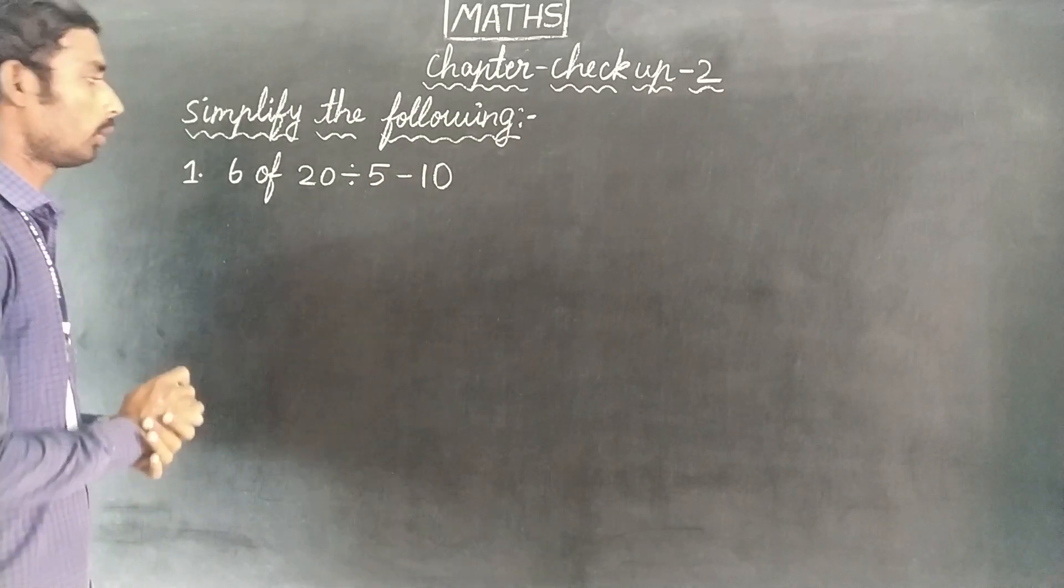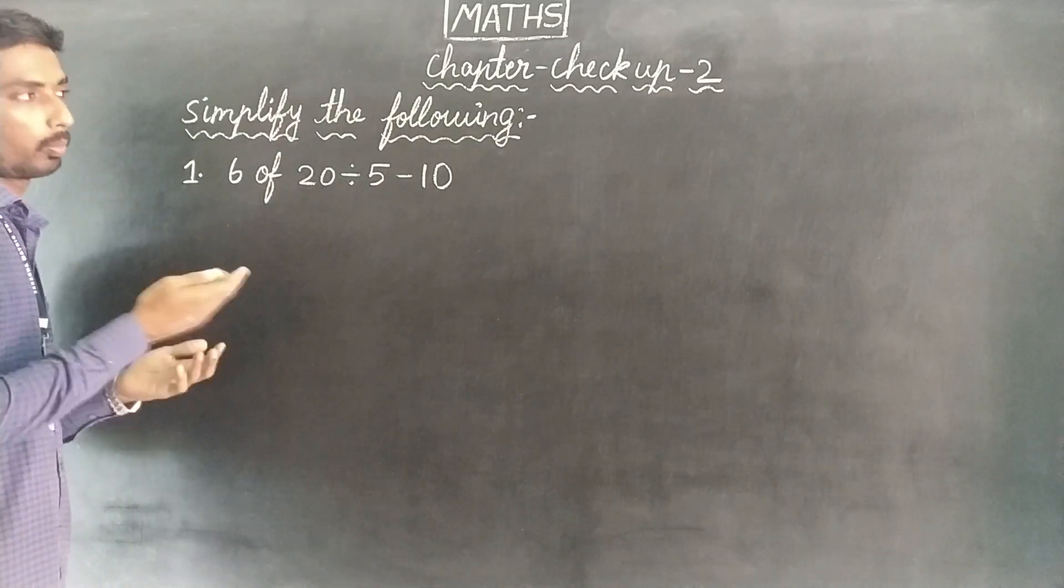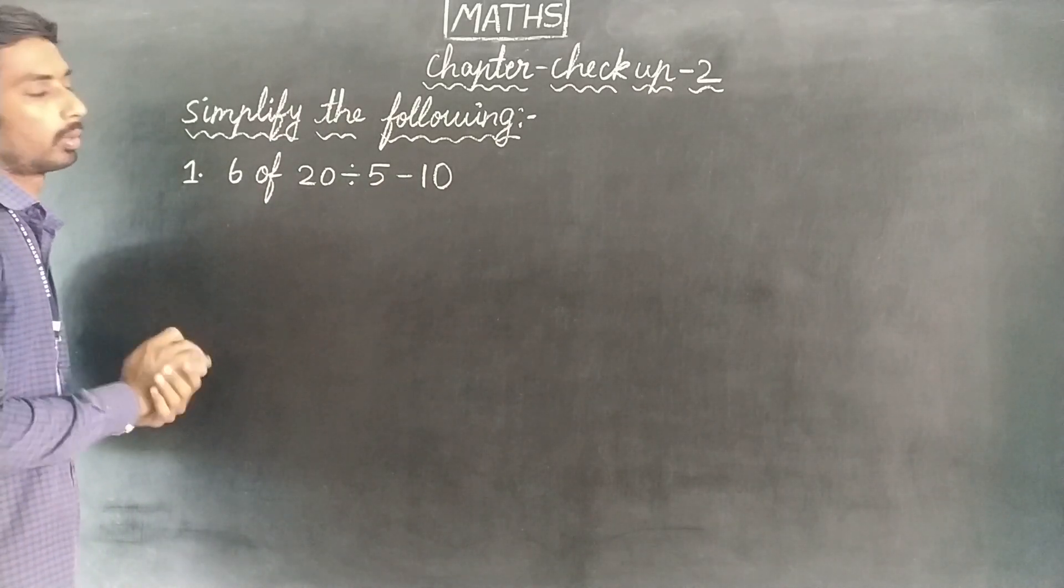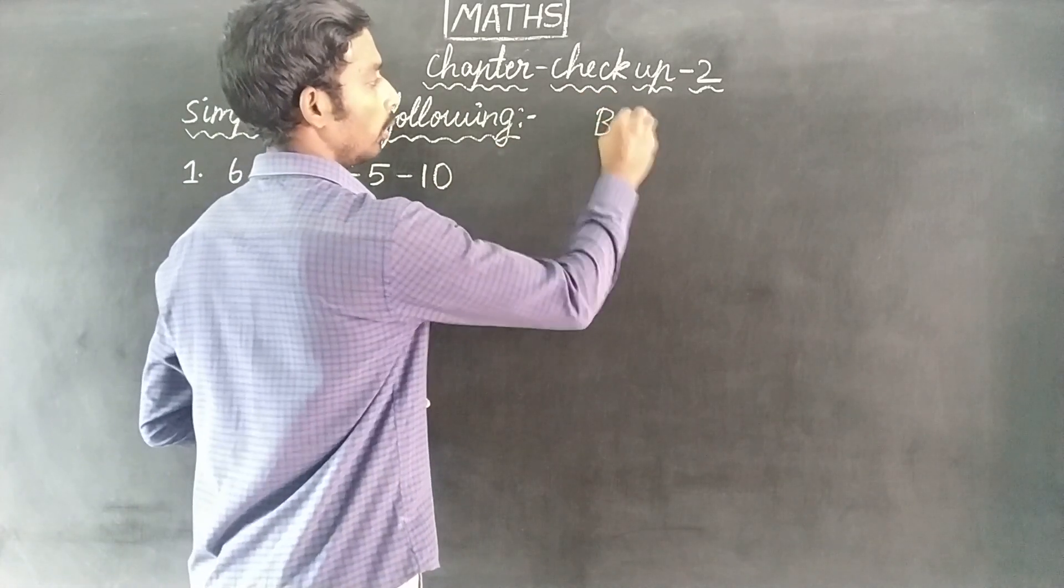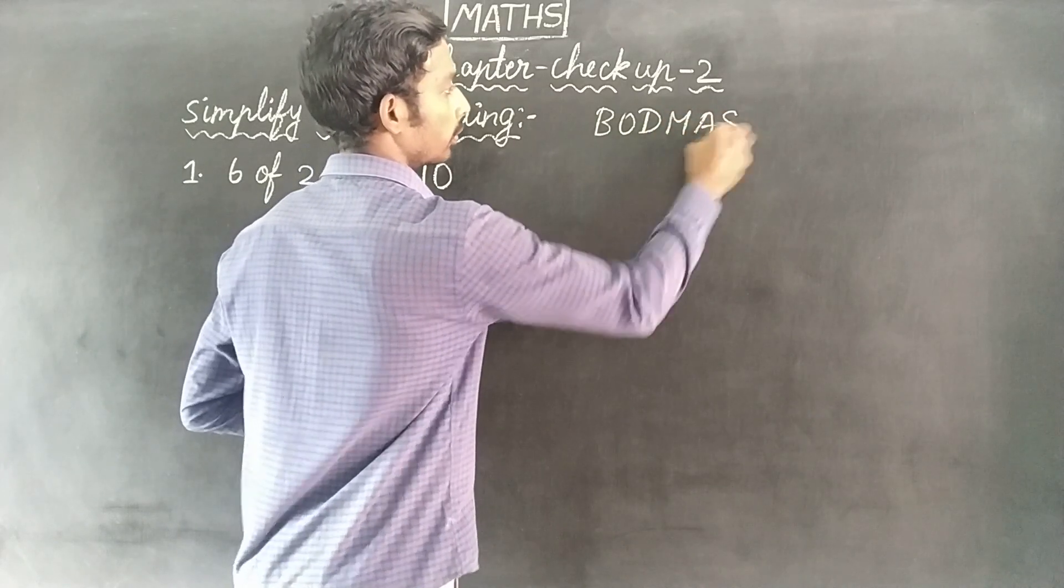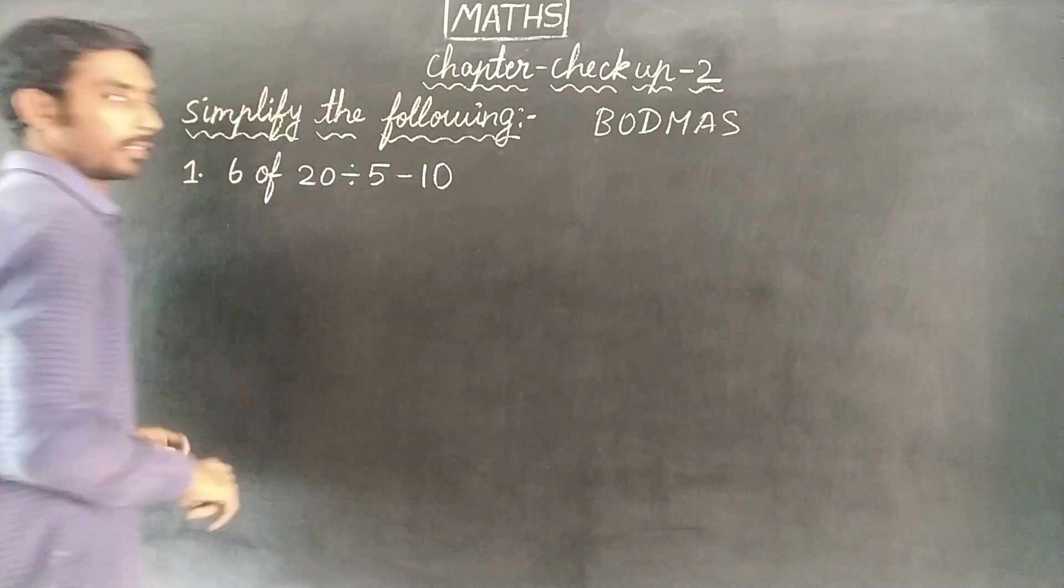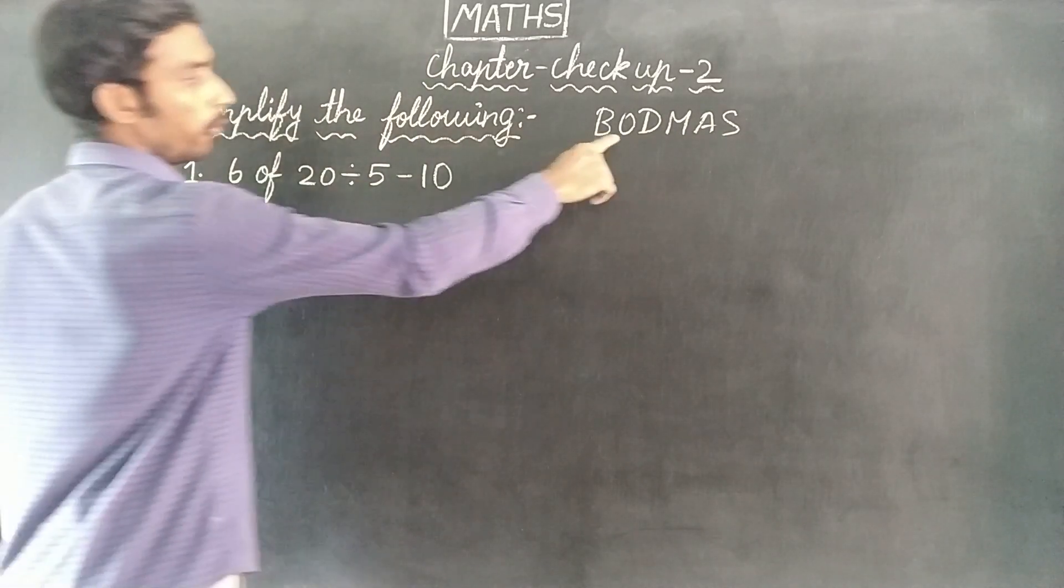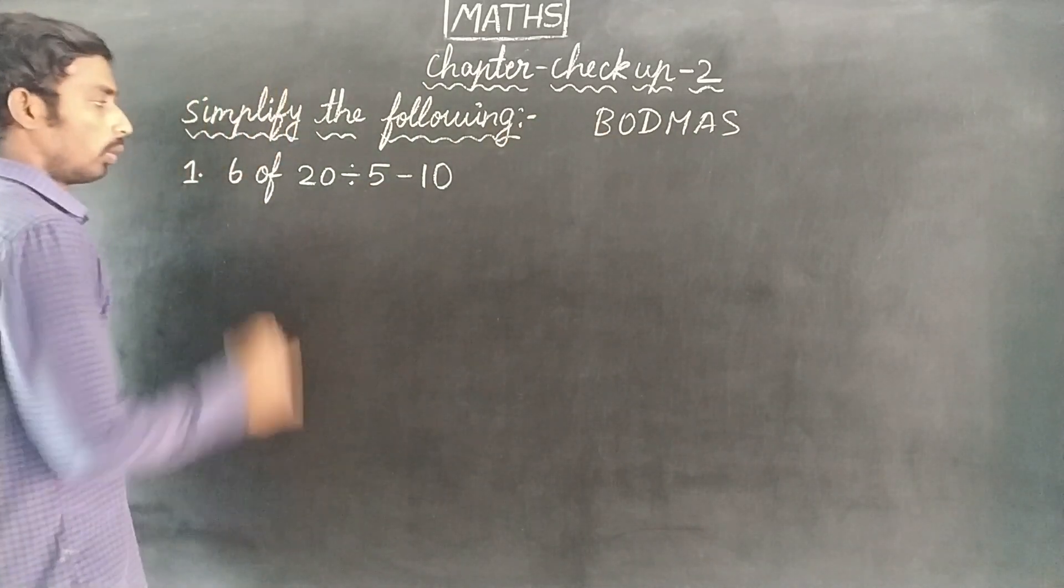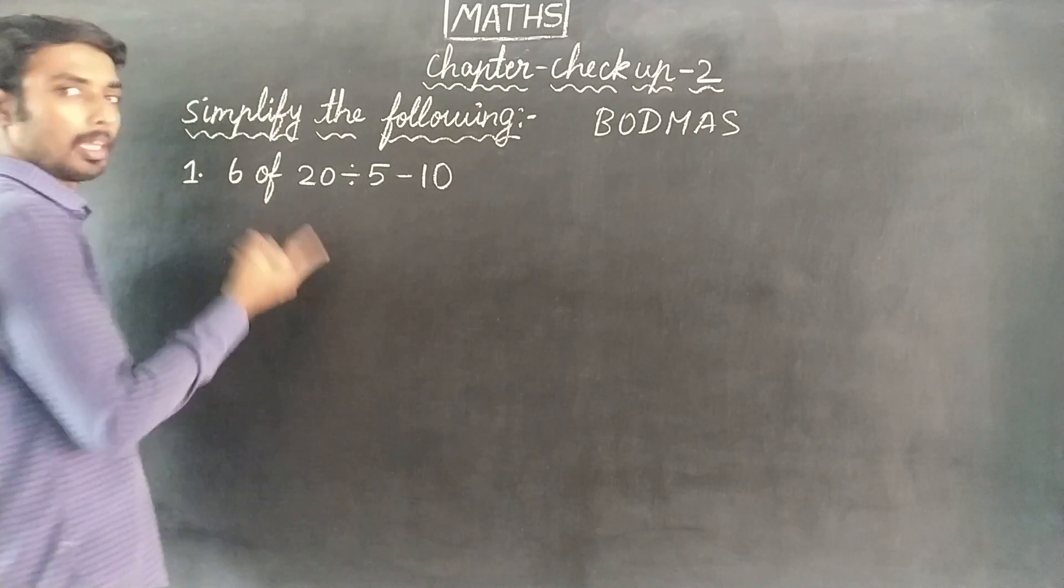So we will use BODMAS rule. Simplify the following using BODMAS. First, B for brackets. Are these brackets done? No. Next, O for of. So of, now we will use multiplication.